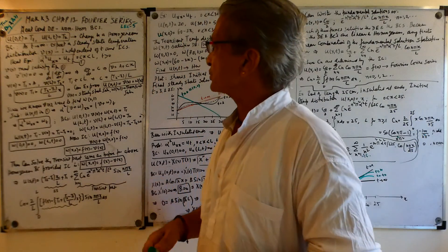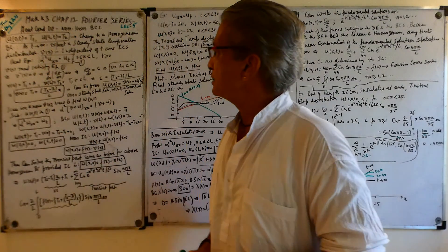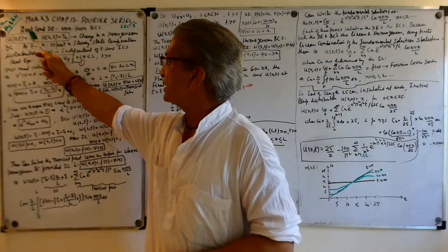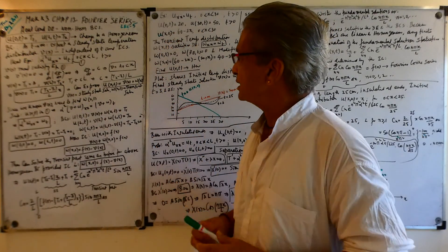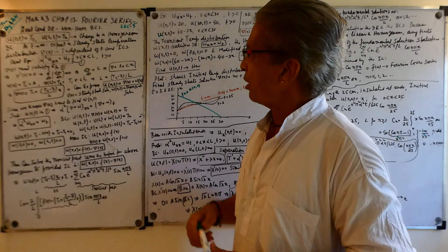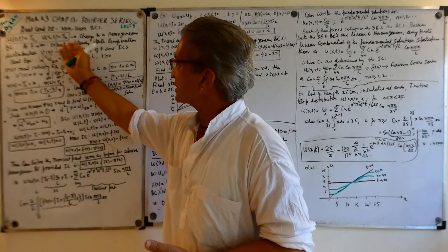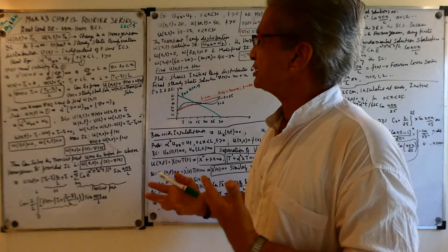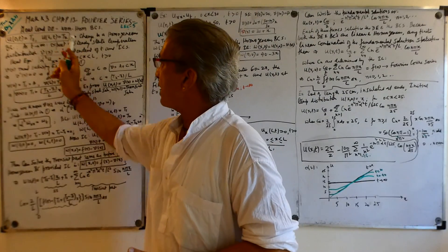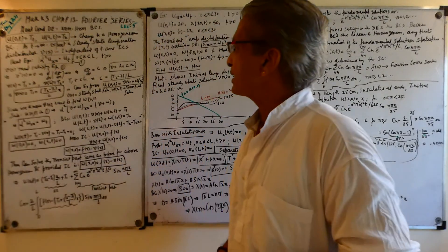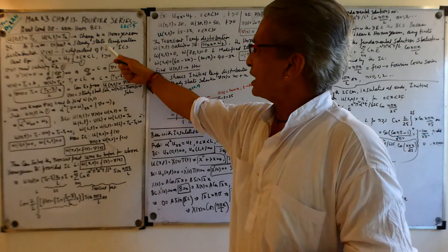But in this case, at x equal to zero and at x equal to L, we have temperatures of T1 and T2. So these are non-homogeneous boundary conditions. The question is how do you solve this problem. Somehow we have to change this problem such that these boundary conditions become homogeneous.